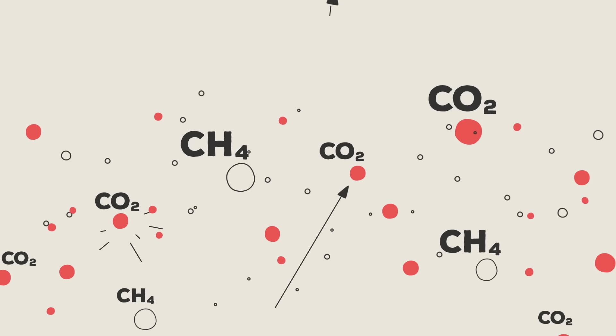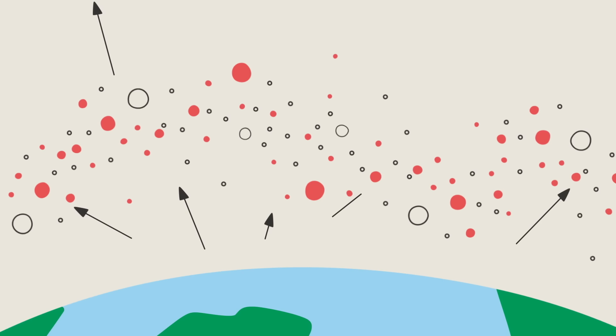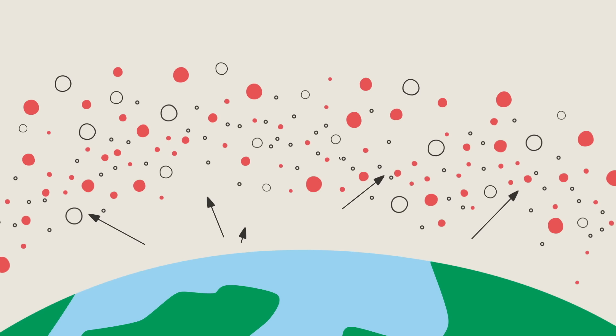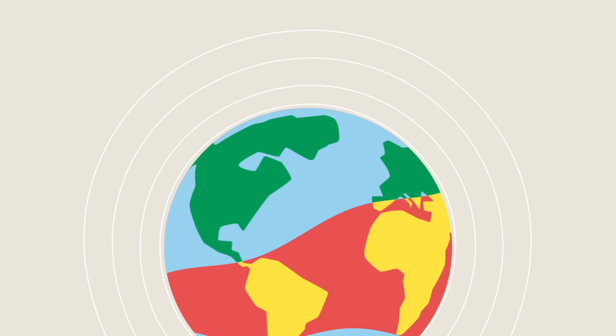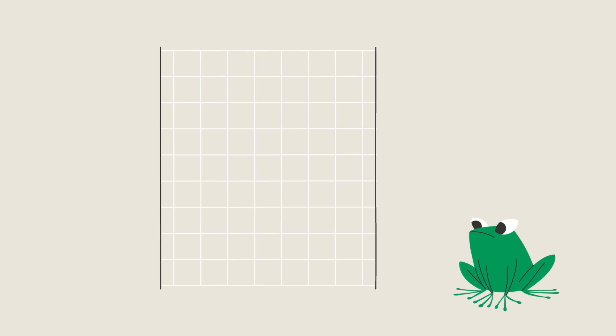But greenhouse gases, carbon dioxide and methane, do absorb infrared wavelengths. So when we add more of those gases to the atmosphere, less heat makes it back out to space, and our planet warms up.